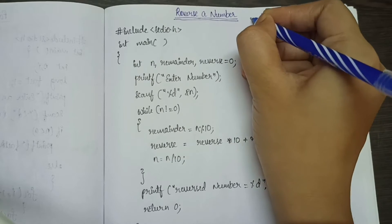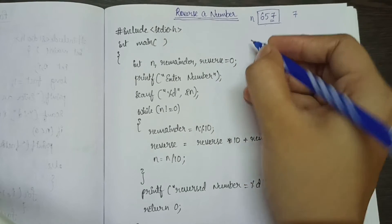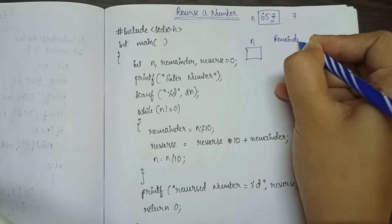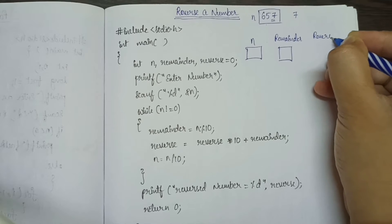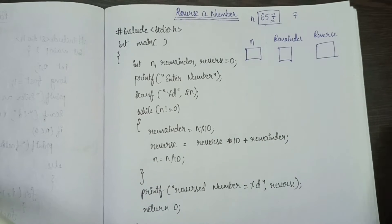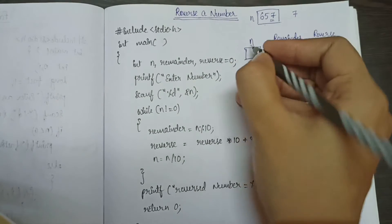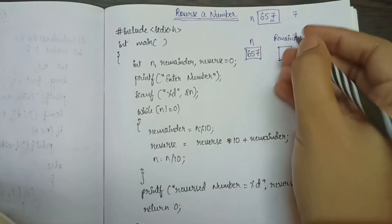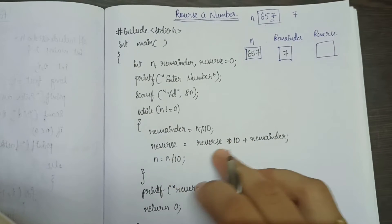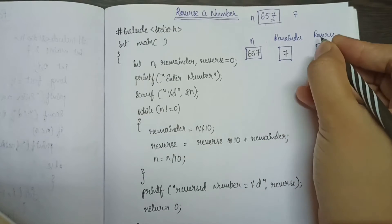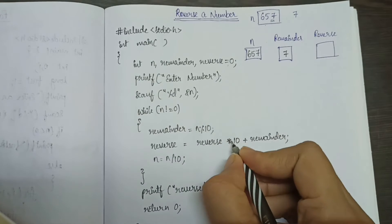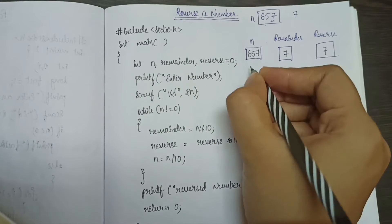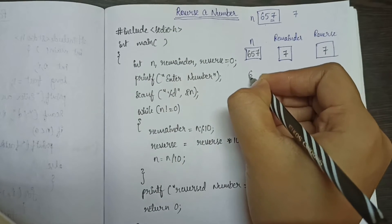Let us trace through with n value 657. Taking reminder as n modulus 10 gives the last digit 7. Reverse is equal to reverse into 10 plus reminder, which is 0 into 10 plus 7, so reverse becomes 7. Then n is divided by 10, so n becomes 65.